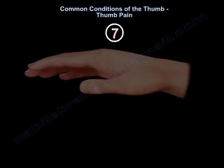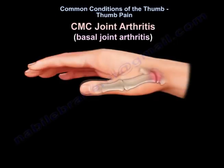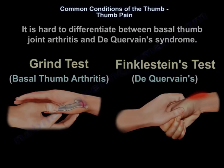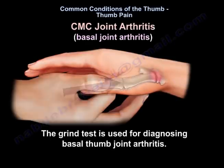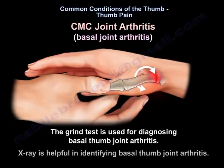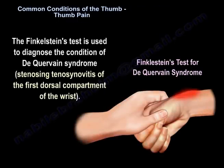The last condition is CMC joint arthritis, or arthritis of the basal joint of the thumb. It can be hard to differentiate between basal thumb arthritis and de Quervain's syndrome. The grind test is used for basal thumb arthritis, and X-ray is helpful in identifying it. The Finkelstein test is used for de Quervain's syndrome.